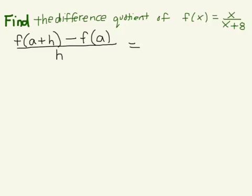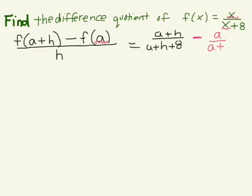From the first part, if we take our function f(x) and evaluate it at a plus h, we have a plus h — because everything in parentheses replaces the x value — divided by a plus h plus 8. Then for our second term, we have a subtraction sign, and we're evaluating the function at a, so everything inside the parentheses replaces the x value. That gives us a divided by a plus 8. Our entire numerator is then divided by h.